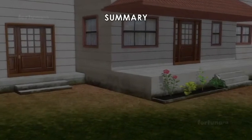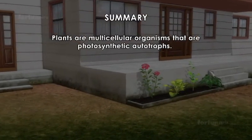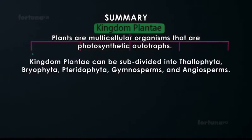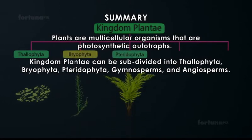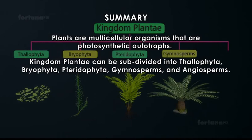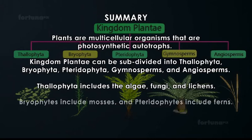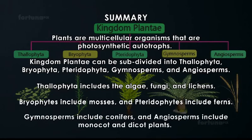Summary: Plants are multicellular organisms that are photosynthetic autotrophs. Kingdom Plantae can be subdivided into Thallophyta, Bryophyta, Pteridophyta, Gymnosperms, and Angiosperms. Thallophyta includes algae, fungi, and lichens. Bryophyta includes mosses and Pteridophyta includes ferns. Gymnosperms include conifers and Angiosperms include Monocot and Dicot plants.